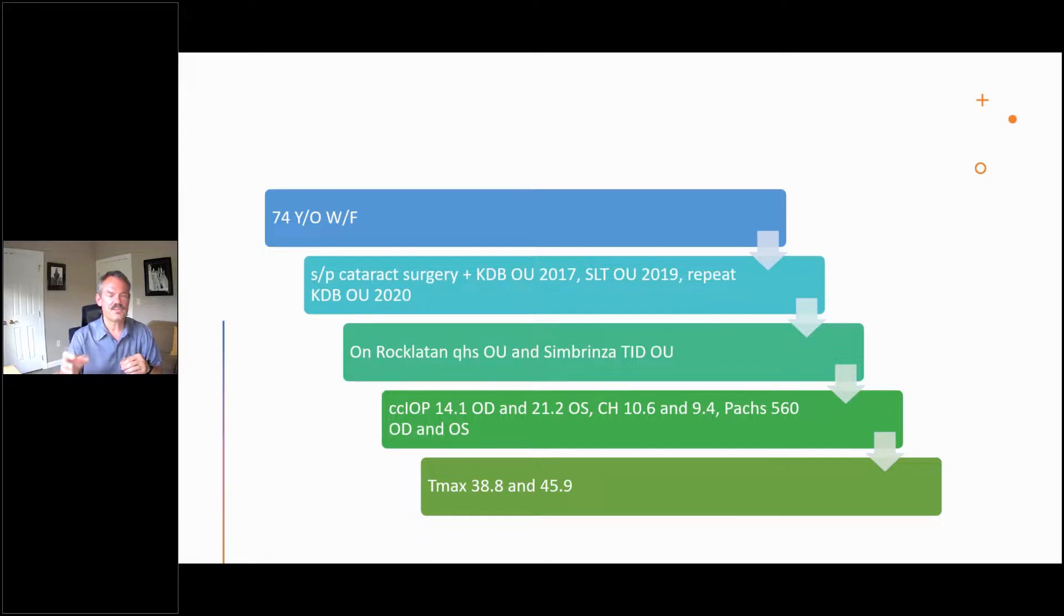Hysteresis is 10.6 and 9.4. The PACs are 560. The T max is 38.8 and 45.9. Here's a patient that needs a trab, definitely needs a trab.